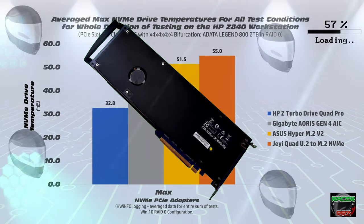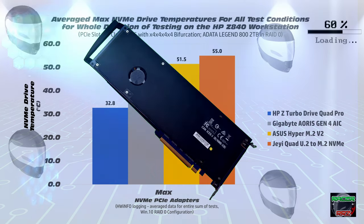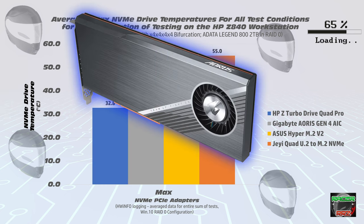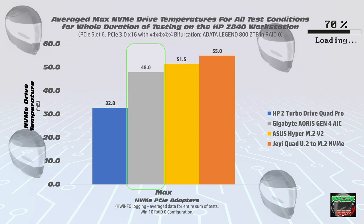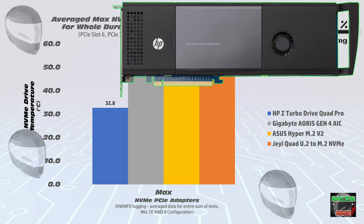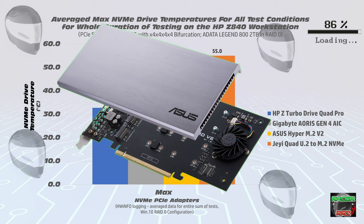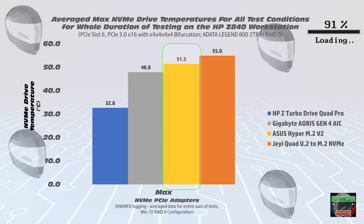Okay, we've got our data and there's a clear winner. Check out those temperatures — around 33 degrees for the HPZ Turbo Drive Quad Pro — really impressive and not what I expected. The Gigabyte Aorus came in at 48 degrees — higher than expected. The HPZ Quad Pro is doing really well at thermal management, very effective system from HP. The Asus Hyper M.2 V2 came in at 51 degrees — pretty impressive for the cheapest adapter in the lineup.